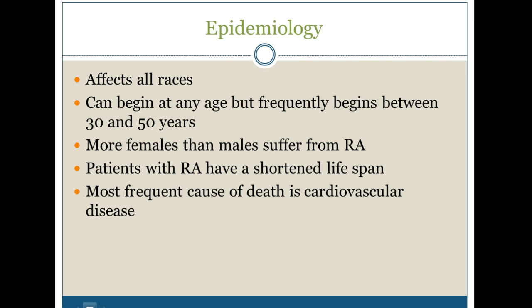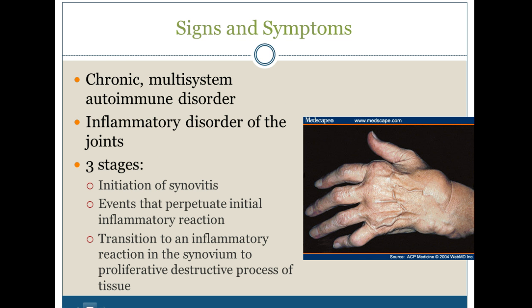We see this affecting all races — it's not just one race or another. It can begin at any age, but it frequently begins between age 30 and 50. We see more females than males suffer from this, and patients with rheumatoid arthritis tend to have a shortened lifespan. The most frequent cause of death is cardiovascular disease.